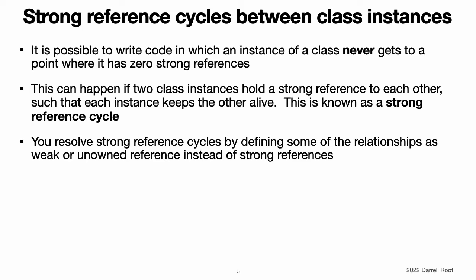Strong reference cycles between class instances. In the prior examples, ARC is able to track the number of references to the new Person instance you create and to deallocate that Person instance when it is no longer needed. However, it is possible to write code in which an instance of a class never gets to a point where it has zero strong references. This can happen if two class instances hold a strong reference to each other such that each instance keeps the other alive. This is known as a strong reference cycle. You resolve strong reference cycles by defining some of the relationships between classes as weak or unowned references instead of as strong references. However, before you learn how to resolve a strong reference cycle, it is useful to understand how such a cycle is caused.